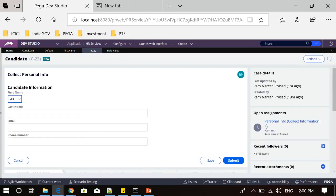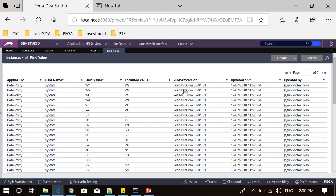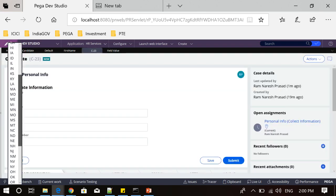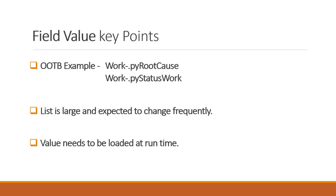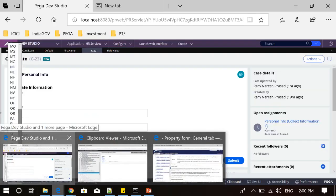As you can see, this dropdown is now changed and has values coming from all those field value rules. This is what the dropdown options are now. The concept behind field value is that it should be used when there is a large list of values that needs to be shown in the UI and those values may change frequently, so you can update the field value rule with new values and they will be loaded at runtime. There are out-of-the-box examples: pyRootCause, available in the work class, and pyStatusWork, which we see most of the time. These are similar examples to what we have just discussed.